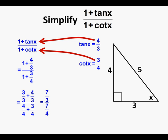Adding the fractions, that leaves us with 7-thirds in the numerator and 7-fourths in the denominator. Since dividing by a fraction is the same as multiplying by its reciprocal, we have 7-thirds times 4-sevenths. 7 over 7 cancel to equal 1, and we're left with the fraction 4-thirds.